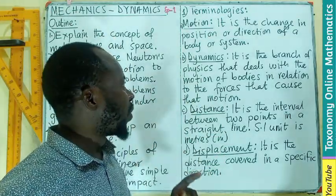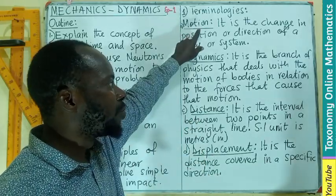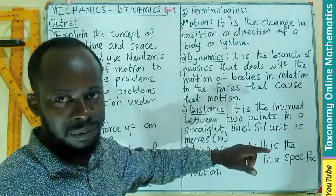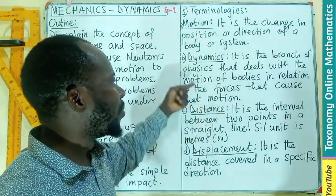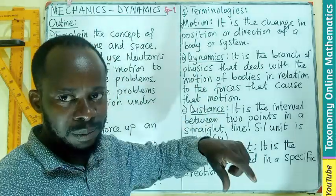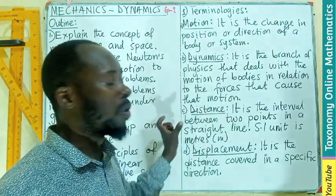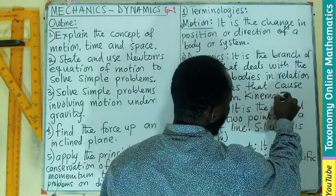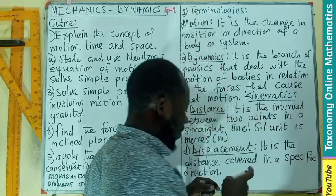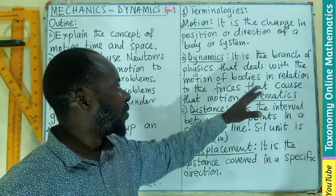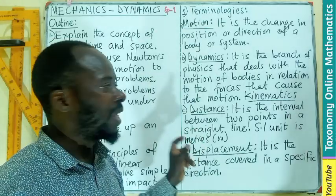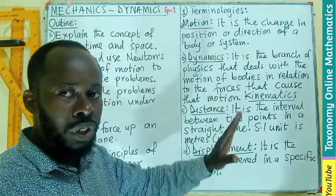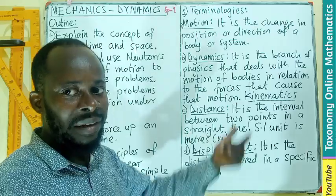Dynamics is a branch of physics that deals with the motion of bodies in relation to the force that causes that motion. This is different from kinematics. Kinematics is also a branch of physics dealing with the motion of bodies, but it is not in relation to force — the force is not applied. Kinematics refers to motion of bodies in terms of their velocity, time, and displacement.